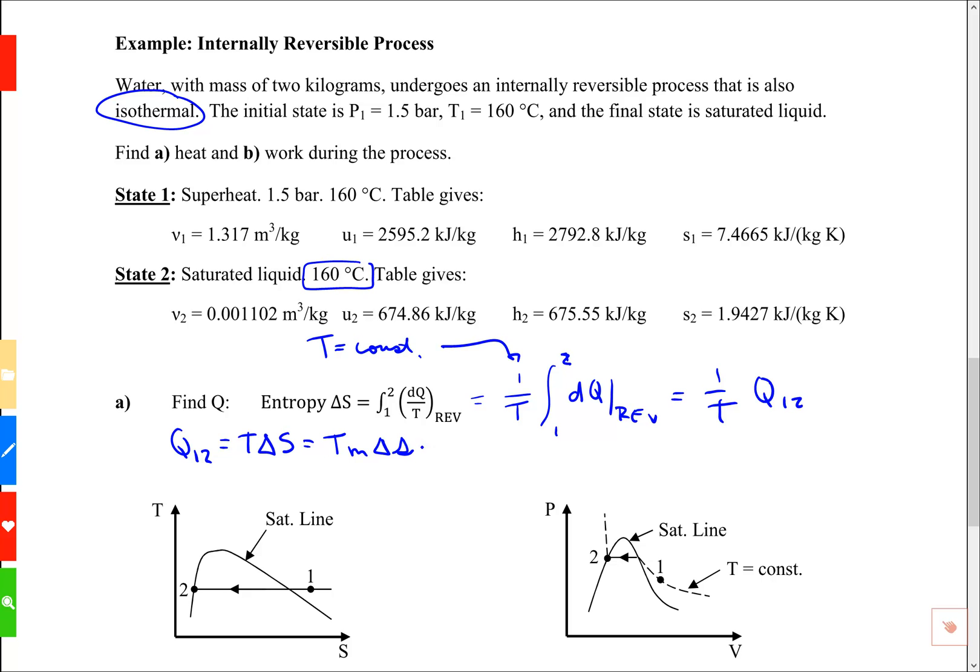And now I can put in some values. My temperature is 160°C. But I've got to convert that to absolute by adding 273. When you're working with entropy you must use absolute temperature. The mass is 2 kilograms.